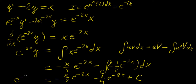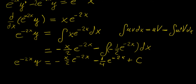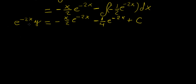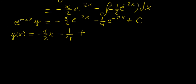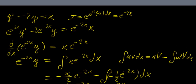So the full equation is: e^(-2x) · y = -x/2 · e^(-2x) - 1/4 · e^(-2x) + C. Dividing both sides by e^(-2x) to isolate y, the exponentials cancel and the general solution is: y = -x/2 - 1/4 + Ce^(2x). This method works for any equation of this type.